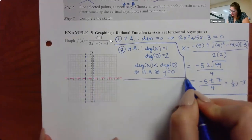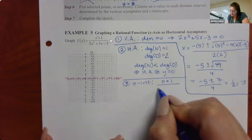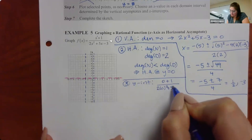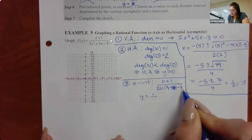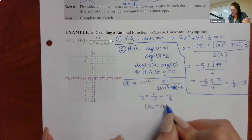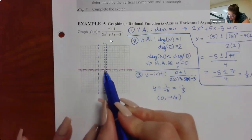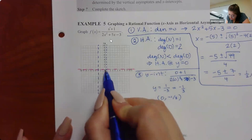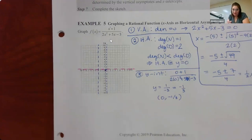Moving to step three, to find the Y-intercept we plug in zero for X. I end up with positive one on top and zero minus three, or negative three, at the bottom. So the Y-intercept is negative one-third. The point zero, negative one-third is pretty close to zero — it's not touching the dotted line, but my pen has a medium point so it kind of looks like it almost touches, but it shouldn't.